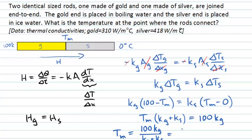And we can put some numbers in here now. This is going to be 100 times, as our data indicates here, for gold, it's 310. And it's in SI units, watts per metre degrees Celsius, that's what we need. Divided by 310 plus 418 for silver. And if we do that calculation, we find we get a number of 43 degrees Celsius. And I've just put that to two significant figures. So there's our answer there.